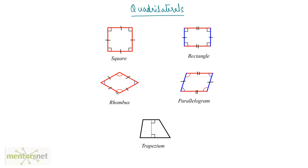In fact, a square is a special type of rhombus and a rectangle is a special type of parallelogram. Another type of quadrilateral is called a trapezium. In this, only two of the sides are parallel to each other. The other two sides are not parallel to each other and the sides may or may not be of equal length.